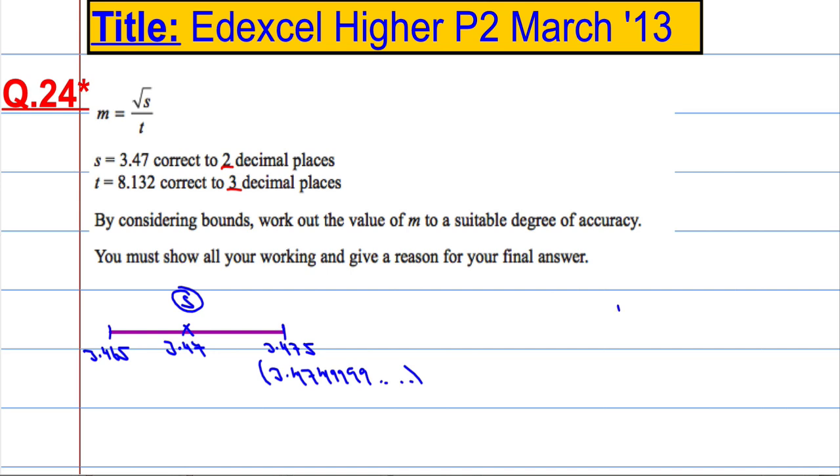Let's take a look at t. So t was also rounded, but it was rounded to 3 decimal places, and that was 8.132. That means the absolute maximum it could have been would have been 8.132499... which is essentially 8.1325,